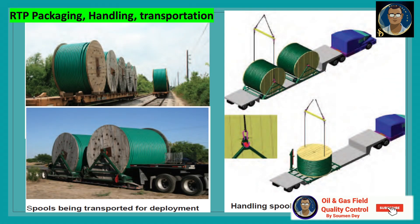Now let us discuss how packaging and handling of RTP is done. For packaging, the pipe is wrapped around the spool drum in layers to the desired length. The outermost layer must be at least 25 mm or one inch below the spool flange. All pipe is hydro tested on a specially designed spool at the factory. Shipping spools are not suitable for hydro testing, and RTP should not be filled with water and hydro tested while on a shipping spool.